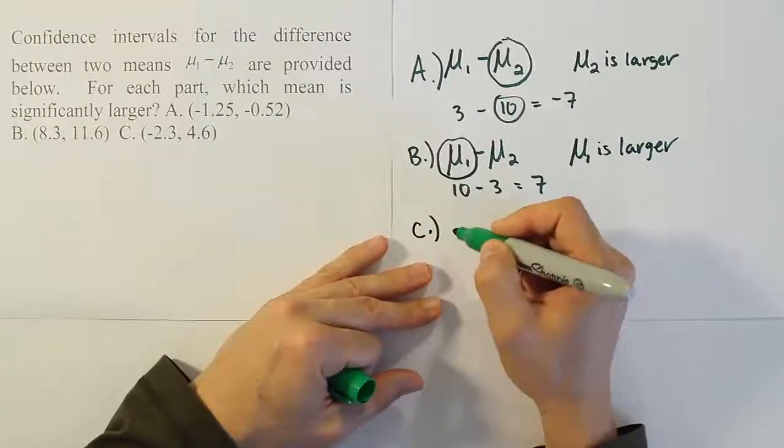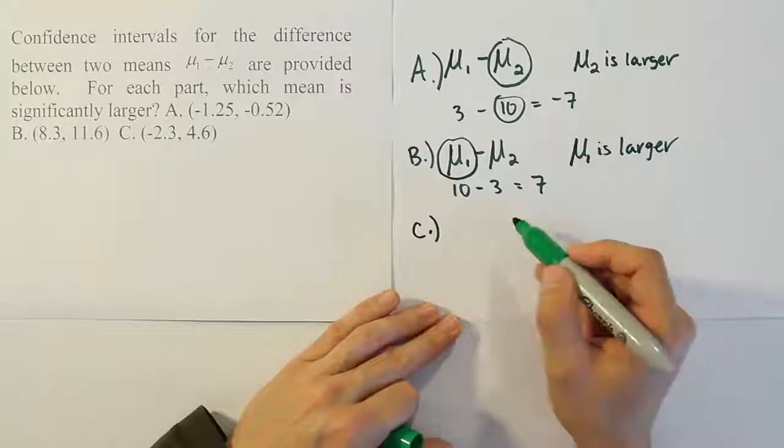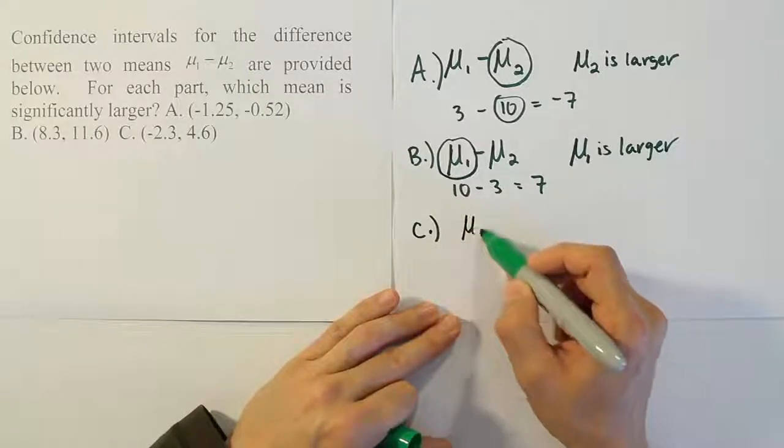And finally, the last scenario, which is C, we see that the interval is negative and positive. So when you do the subtraction here,